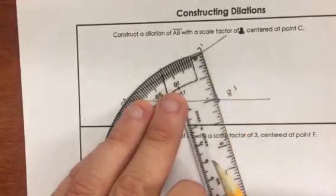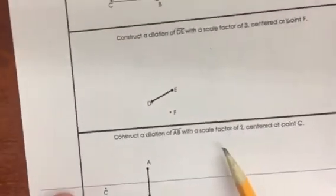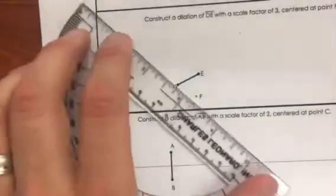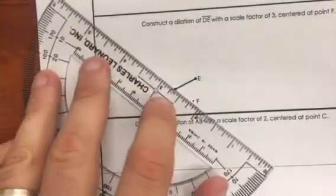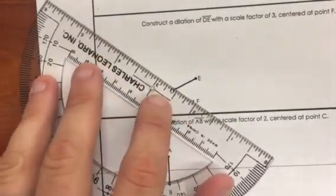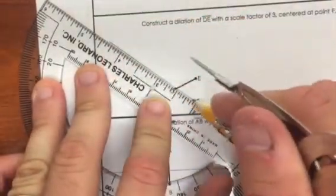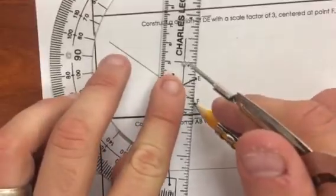Let's do one more. All right, this time we're gonna do a scale factor of three, so once again you're just gonna draw some long lines. Scale factor of three, centered at point F. So we're gonna draw that long line here connecting D and F, and then we're gonna connect F and E. Once again, just a long line, just as long as you can.